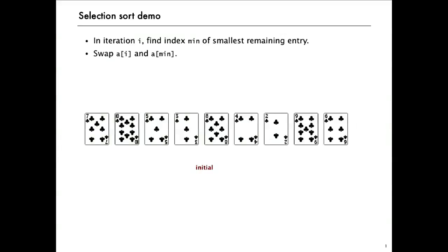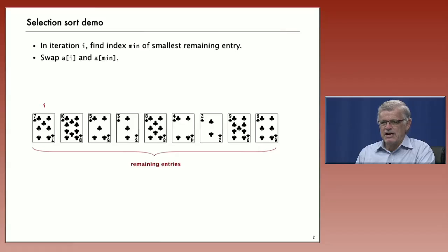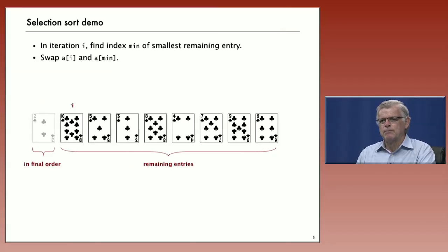Selection sort is based on iterating that idea. The basic selection sort method is to, in the i-th iteration, find the smallest remaining entry to the right of i or bigger index than i and then swap that with i. So when we start out, i is at the left end and all the remaining entries are to the right. We scan through and the smallest one is the two, three entries from the right. So we swap that. That's the first step.